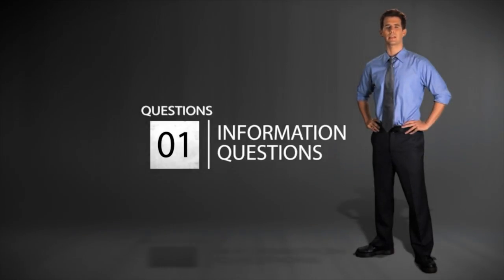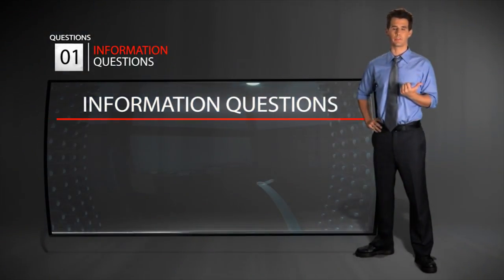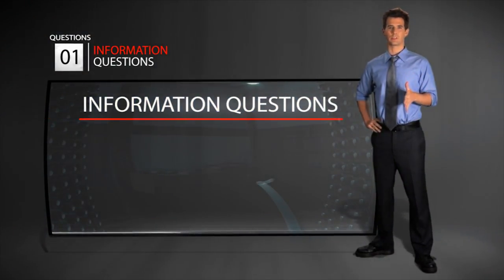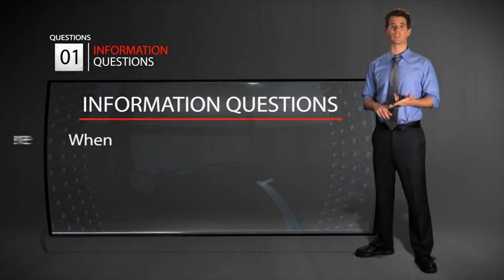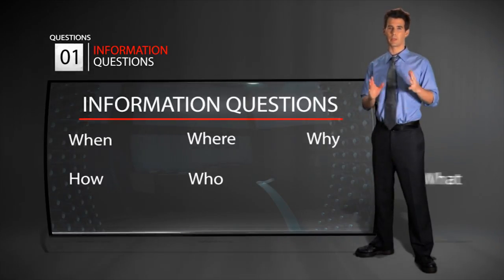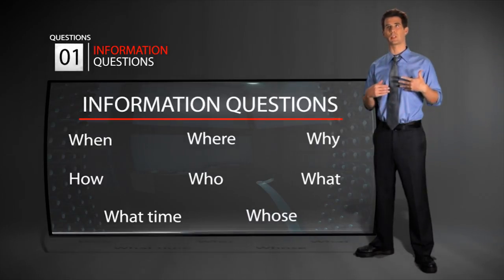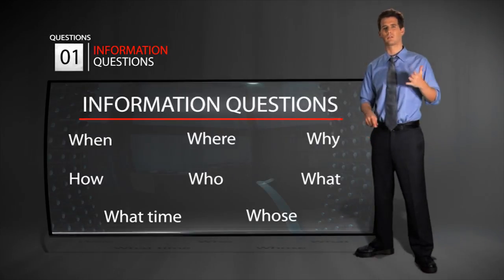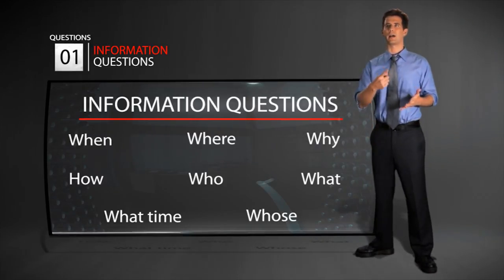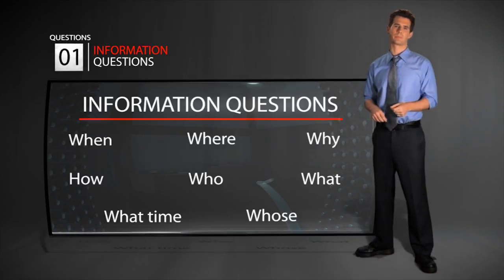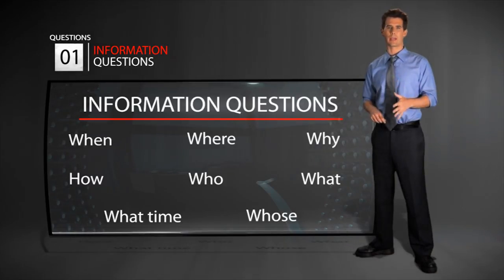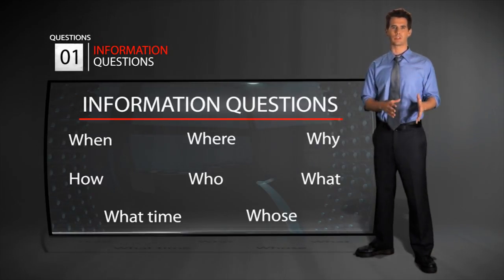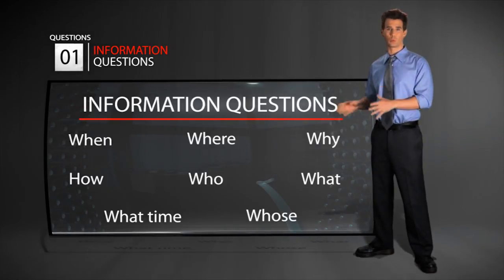Let's take a closer look at information questions. So what are information questions? Information questions are questions with a WH question word — a word like "when," "what," "who," "where," "how," "why," "which," or "whose." Let's take a look at some different questions for each different WH question word.